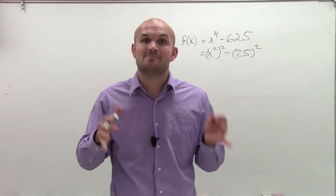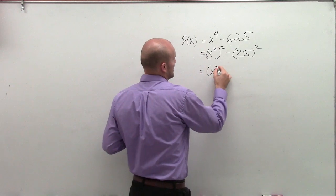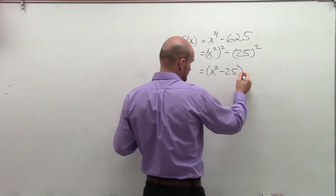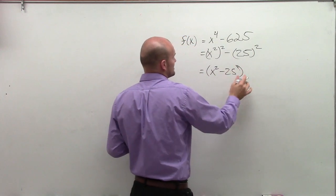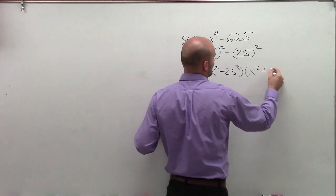So remember, the difference of squares tells us if a squared minus b squared, then you have a minus b times a plus b. So I can rewrite this as x squared minus 25 times x squared plus 25.